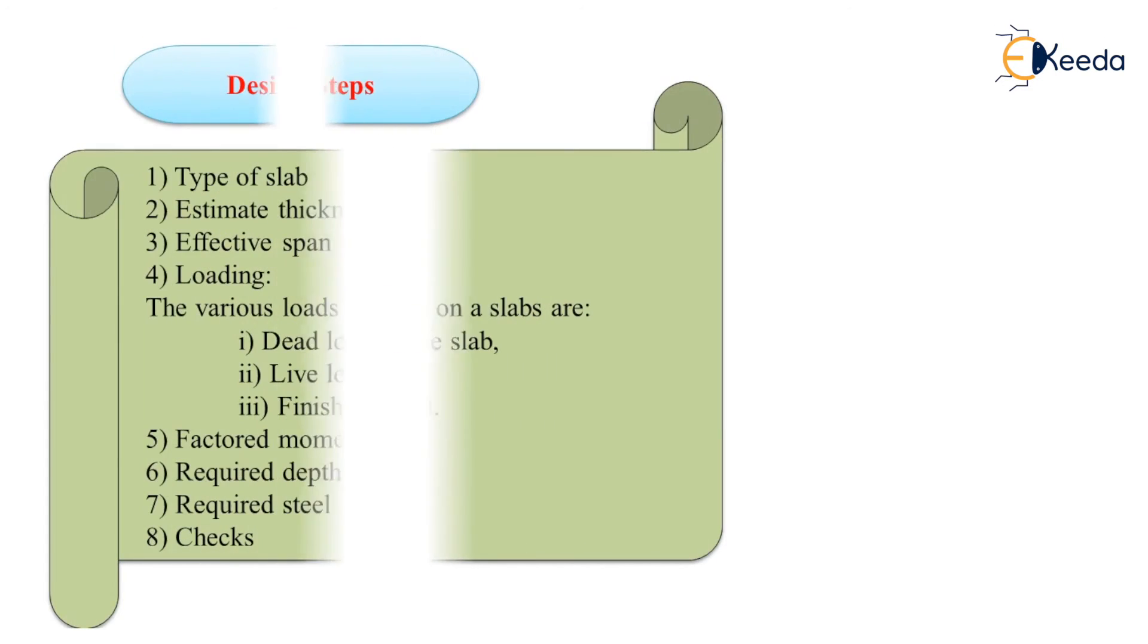To design any structural member, we have to follow some steps and recommendations given by IS code. Here are some general steps to design a slab. Firstly, we have to find out the type of slab by taking the ratio of Ly by Lx.